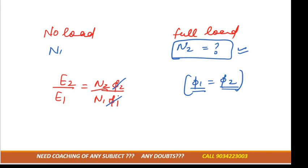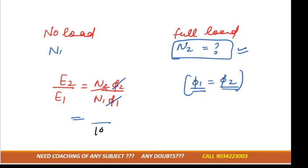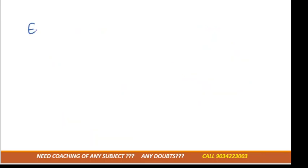So we know the value of N1 - they have mentioned that is 1000 RPM. We need to calculate N2, but if we know the value of E2 and E1, then only we can proceed further.